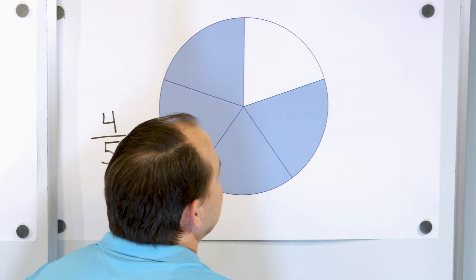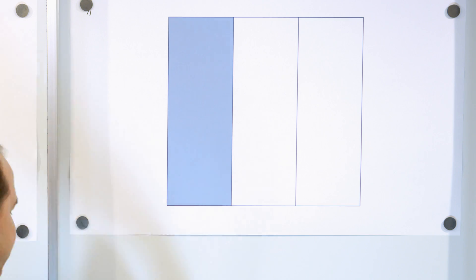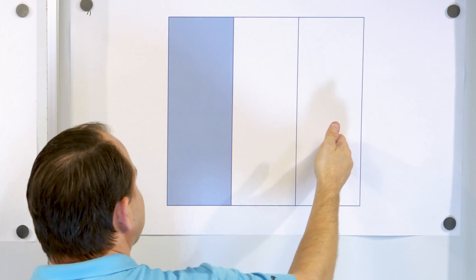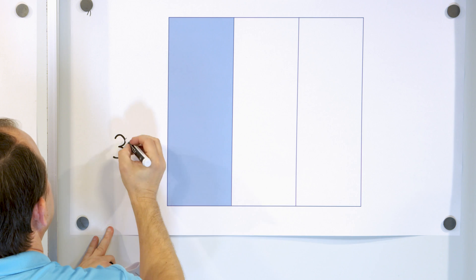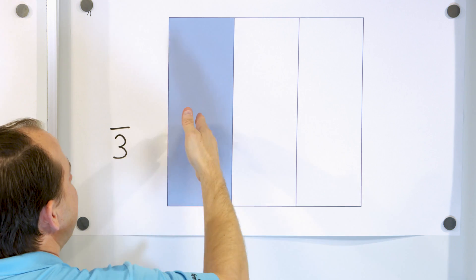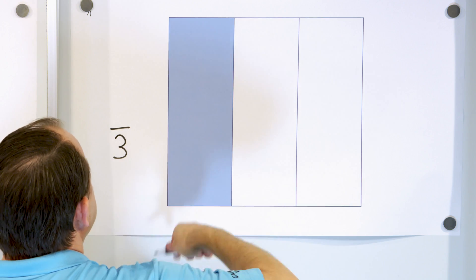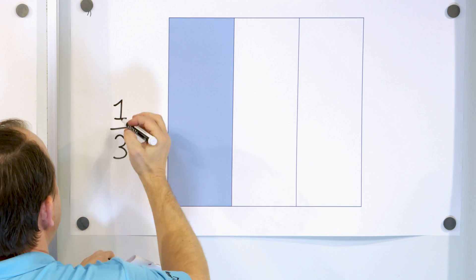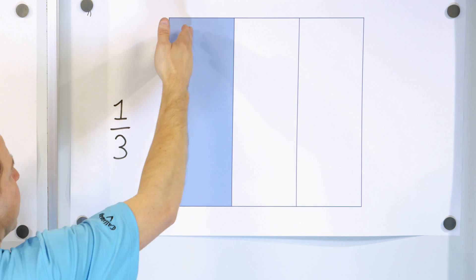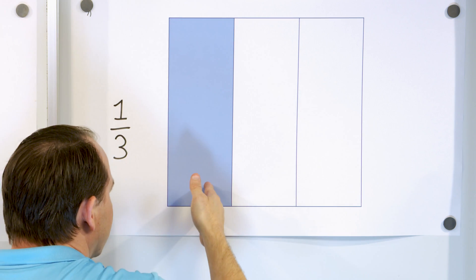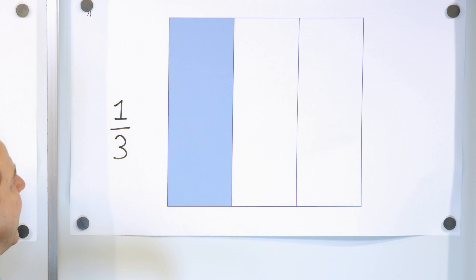Let's take a look at our next one. How many pieces have we cut the object into? One, two, three pieces — so the three goes on the bottom. How many pieces do we have? Only one — so one goes on the top. Here we have only one out of three pieces; we call this one third.